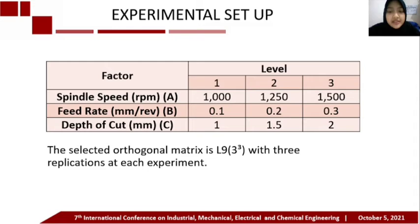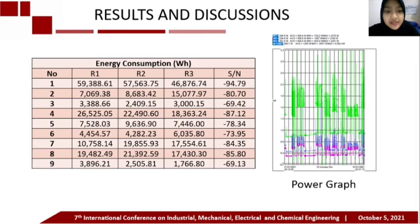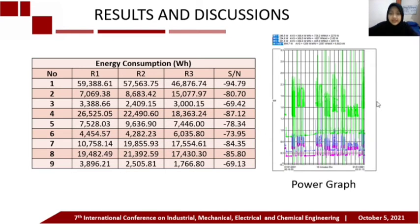Here are the factors and levels chosen for the experiment. The selected orthogonal array is L9 cubic with true replication at each experiment. Here is the signal-to-noise ratio for energy consumption, and you can see the power graph for the CNC turning process.